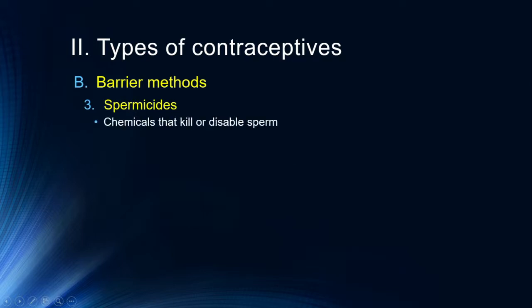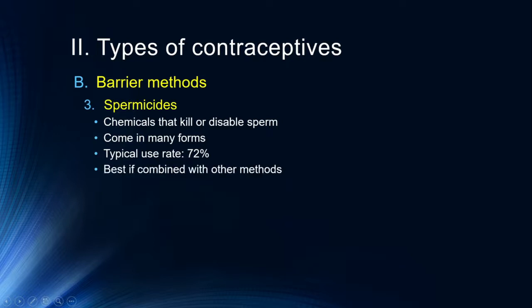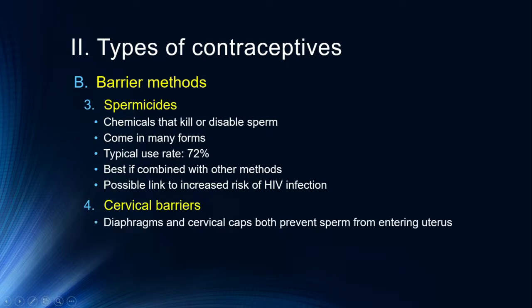Other barrier methods include spermicides — chemicals that kill or disable sperm. They come in many forms: foams, gels, and that sort of thing. Not particularly effective, about 72% effective. They're best when combined with other methods, such as spermicide and a condom. Unfortunately there does appear to be some link to increased risk of HIV infection. Early in the AIDS epidemic, lubricants and condoms with spermicide were encouraged, but that turned out to be terrible advice because it does something to the mucous membranes that actually makes HIV infection more likely.